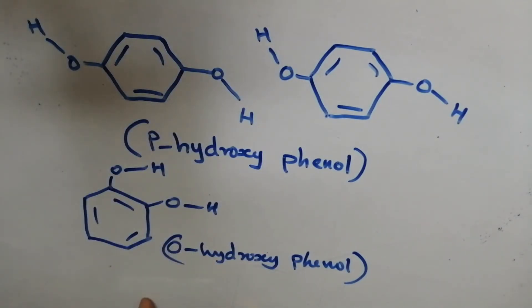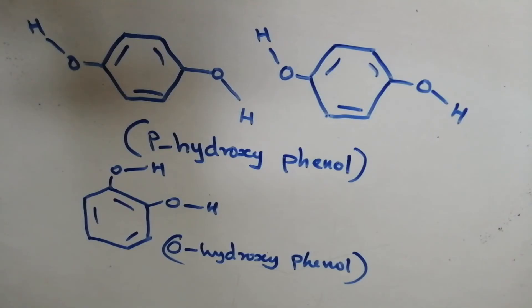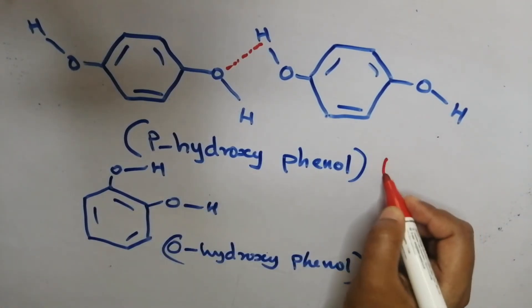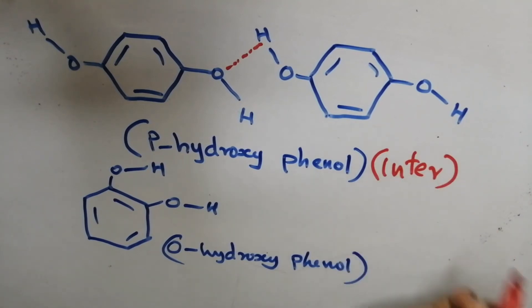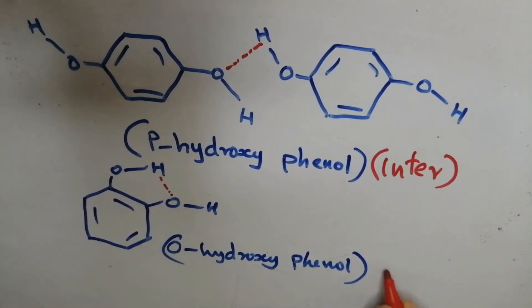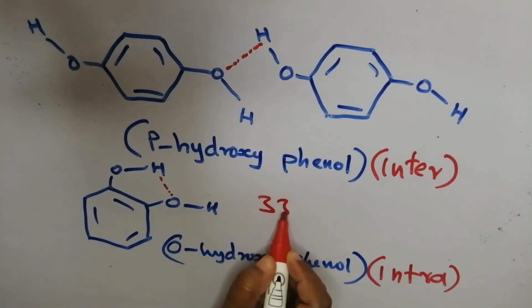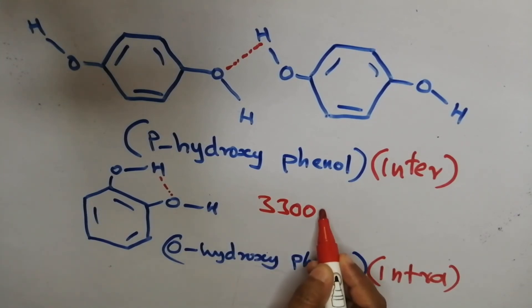A clear example is comparing para-hydroxyphenol and ortho-hydroxyphenol. Para-hydroxyphenol exhibits intermolecular hydrogen bonding — hydrogen bonding between two separate molecules. Ortho-hydroxyphenol exhibits intramolecular hydrogen bonding — bonding within the same molecule. The O-H stretching frequency falls in the range of approximately 3300 to 3500 cm⁻¹.